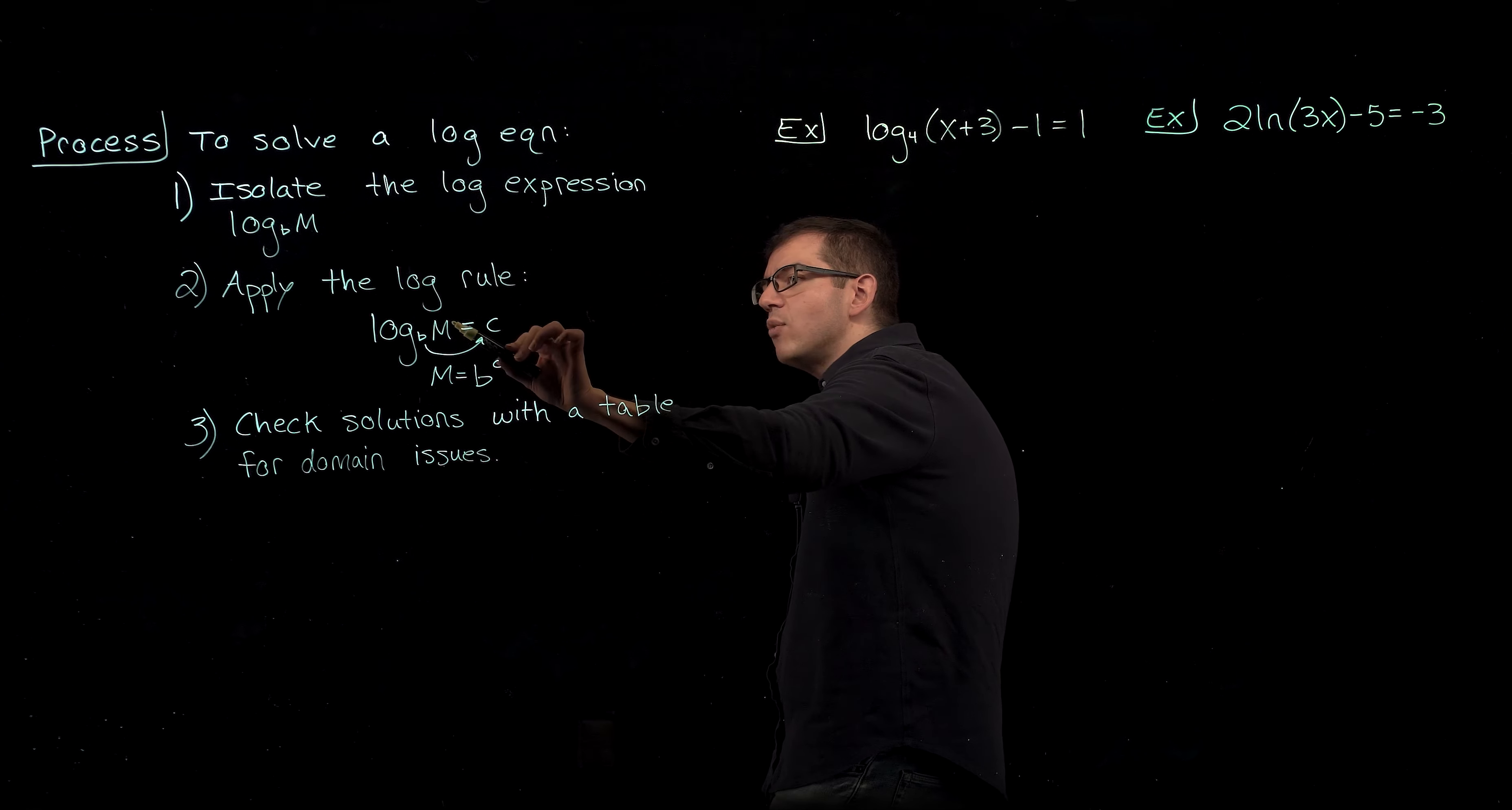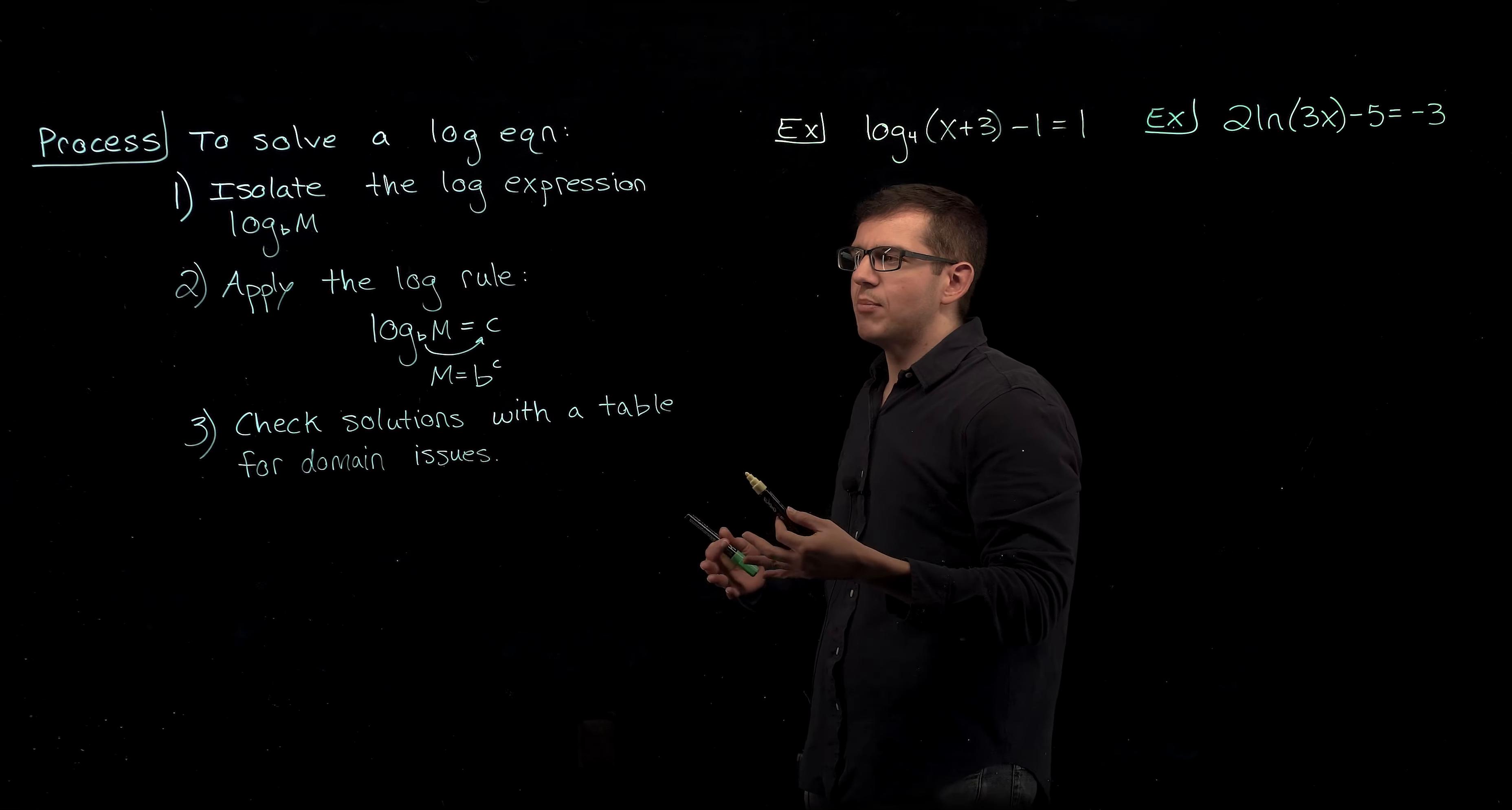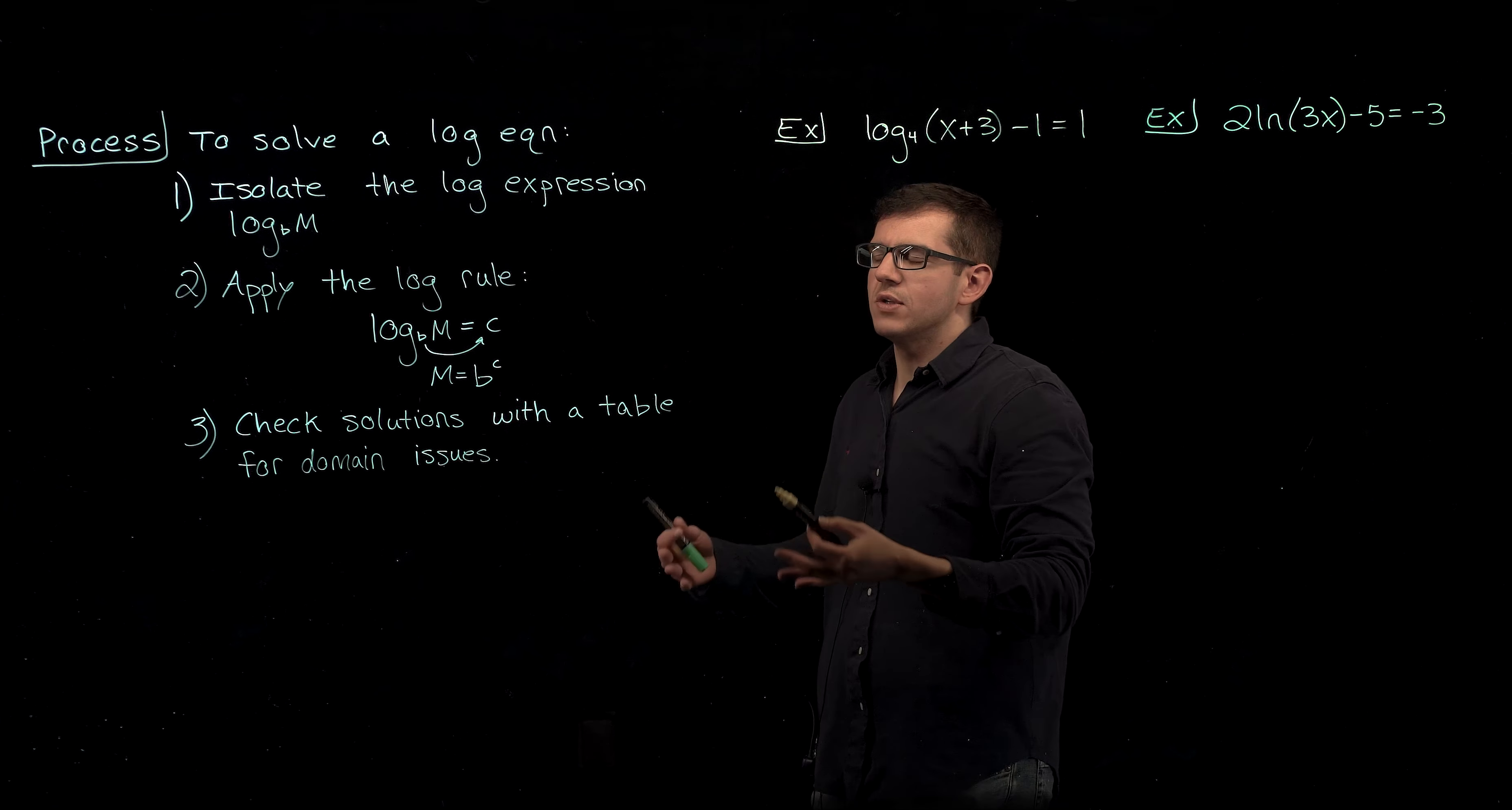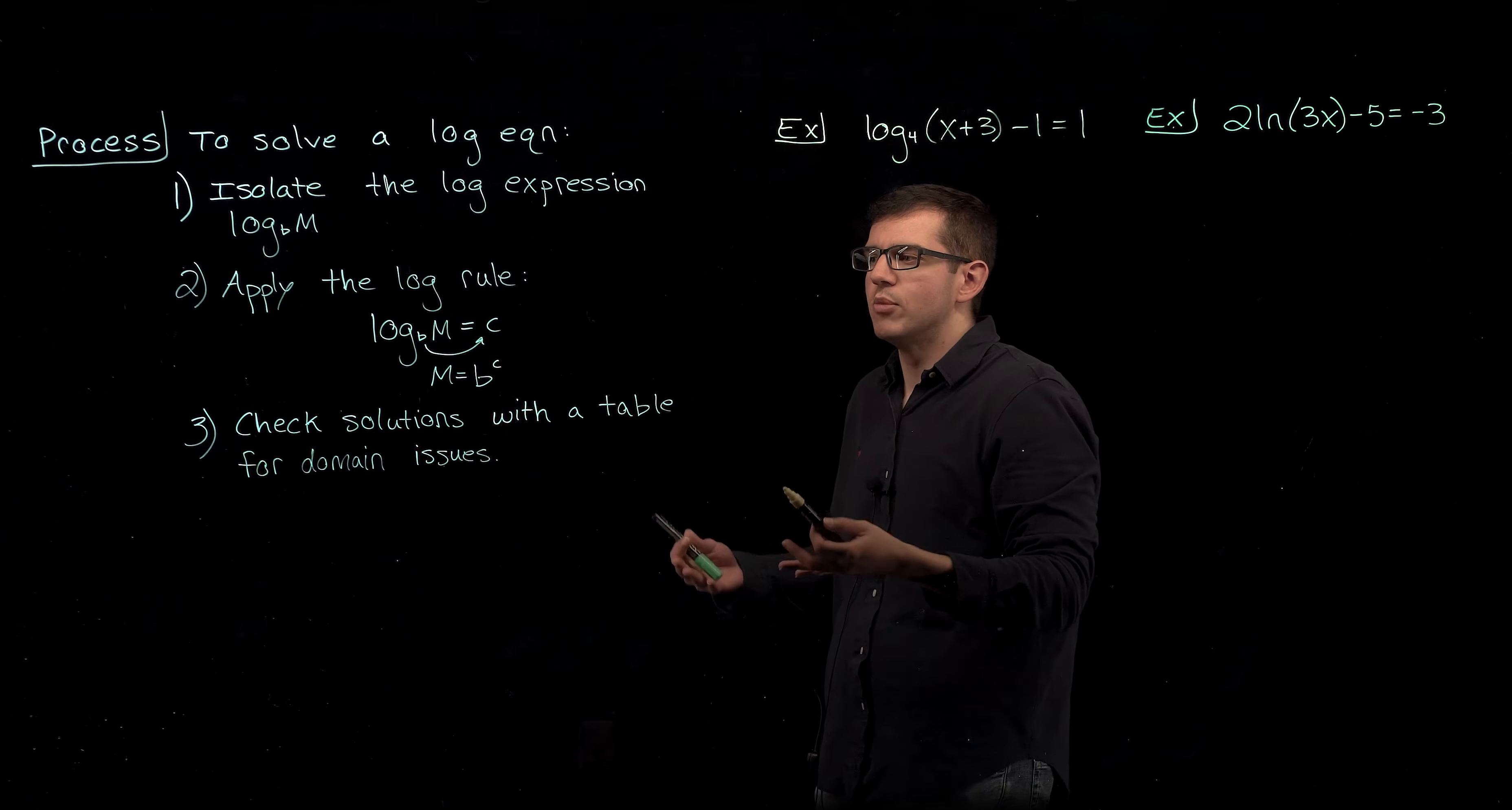because when you solve for m and therefore your variable, whatever was originally plugged inside your log has to be a positive number. We cannot plug zero or negative numbers inside of a log. So these solutions may end up giving you false solutions, things that don't actually work in the original domain of the problem before the log was removed.